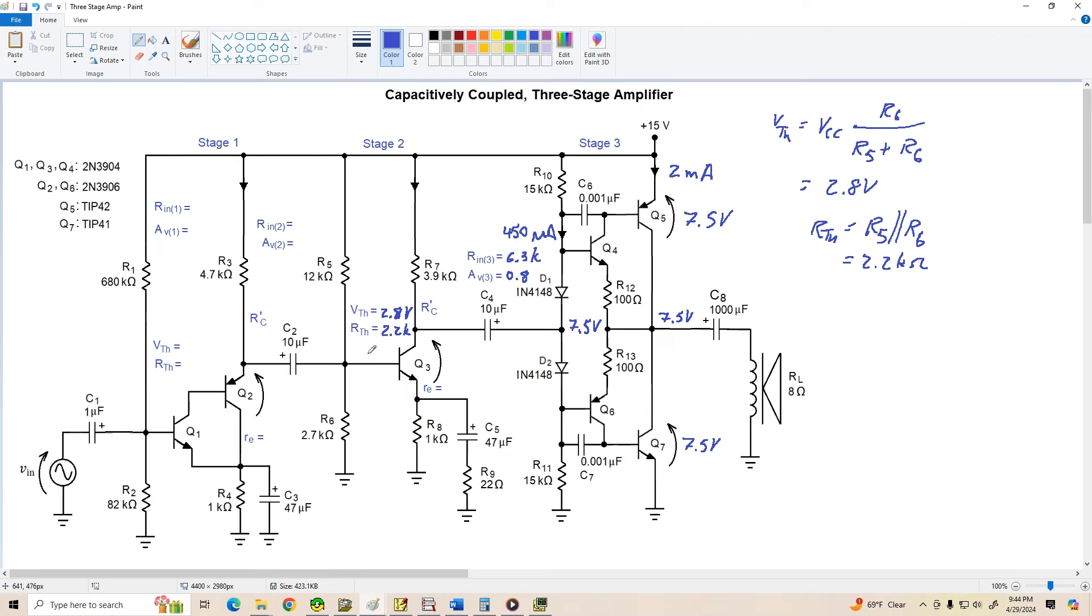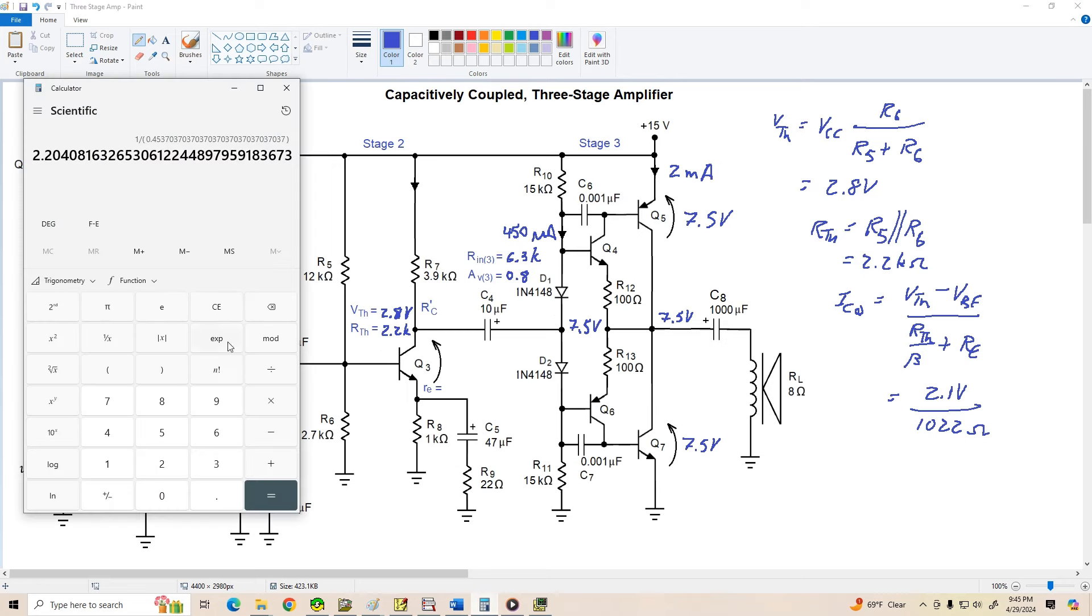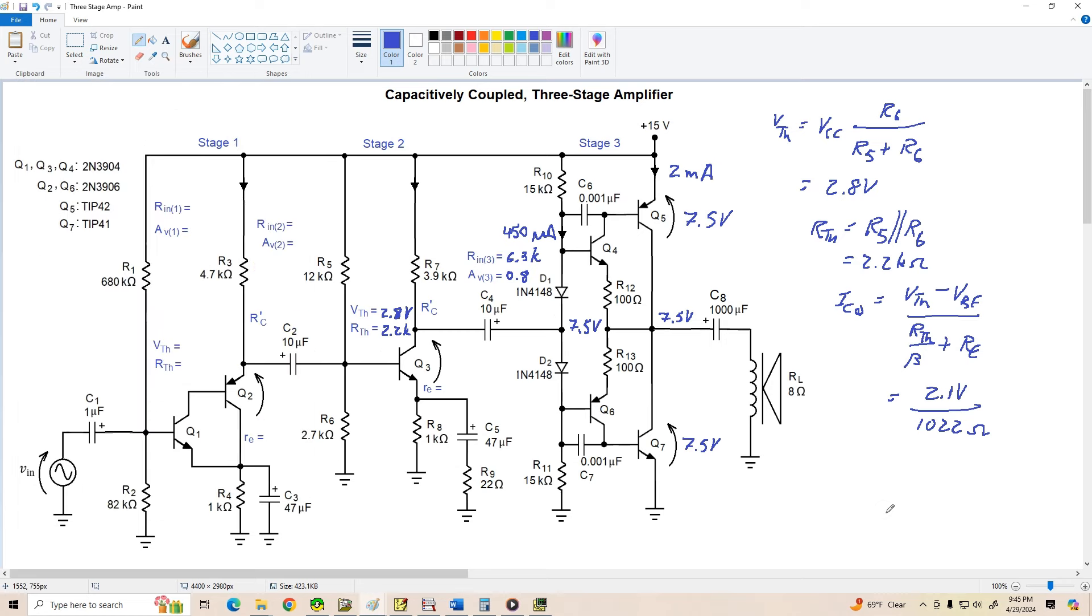Now, let's now determine ICQ. ICQ is equal to VTH minus VBE divided by RTH over beta plus RE. So VTH is 2.8 volts, and VBE is 0.7. So that's going to be 2.1 volts divided by RTH is 2200 divided by a beta of 100 is 22 ohms. So RE is 1,000 plus 22, so 1,022 ohms. 2.1 divided by 1,022, so let's round it off to 2.1 milliamps. So we have about 2.1 milliamps for ICQ3.